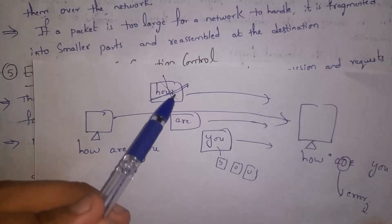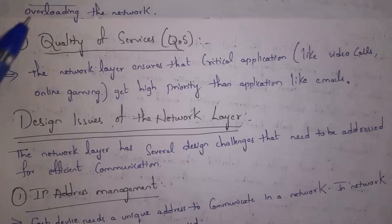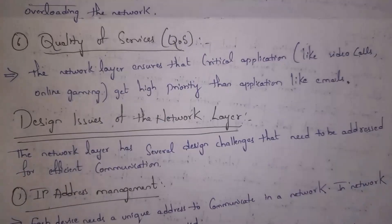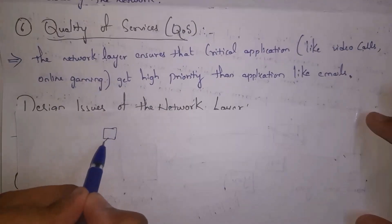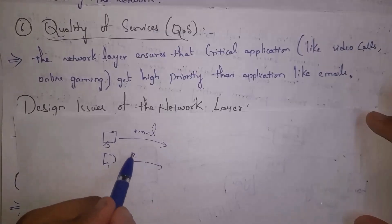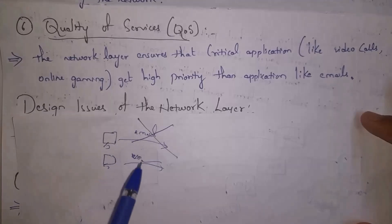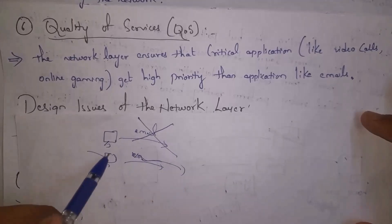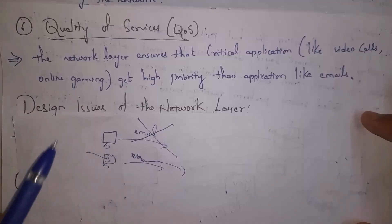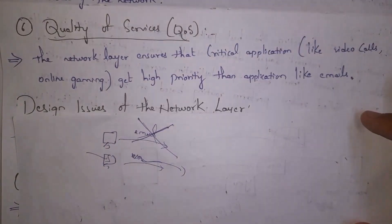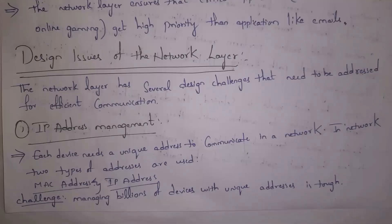The last function is Quality of Service, shortly called QoS. If multiple devices transfer data at the same time there will be congestion. For example, one person is sending an email and another person is doing a video call. If there is high traffic in the network, critical applications like video calls and online gaming are given high priority compared to emails. The network gives permission to video calls first and will not allow emails to pass, in order to control congestion.